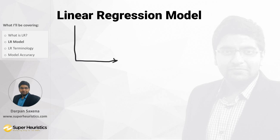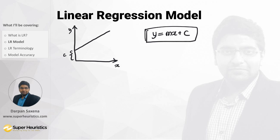Going back to class 10th math — the equation of a straight line with y-axis, x-axis, and intercept c is y = mx + c. The line we are finding in linear regression is exactly this. The objective of this algorithm is essentially this one equation. We need to find this equation for our historic data, where x is the input and y is the output.